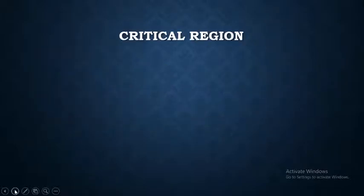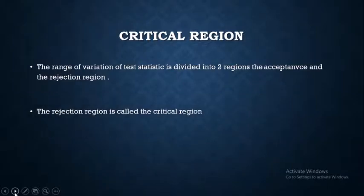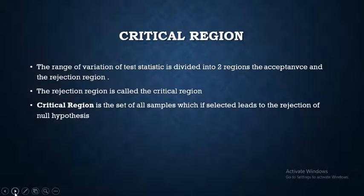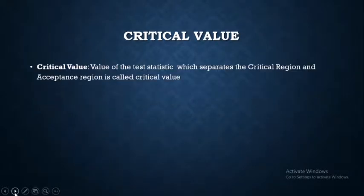The range of variation of the test statistic is divided into two regions: the acceptance region and the rejection region. The rejection region is called the critical region, and it is also the set of all samples which, if selected, lead to the rejection of the null hypothesis. The value of the test statistic that separates the critical region from the acceptance region is called the critical value.